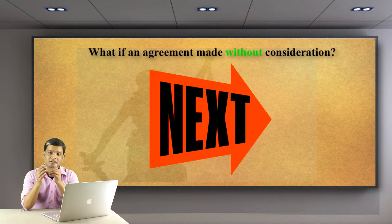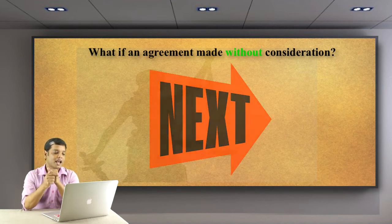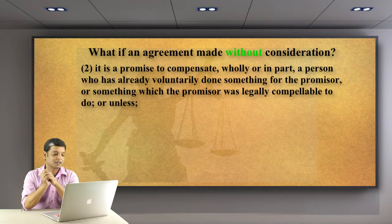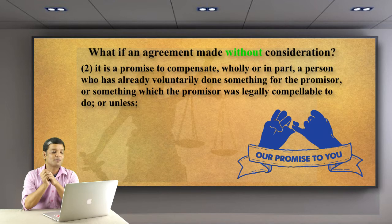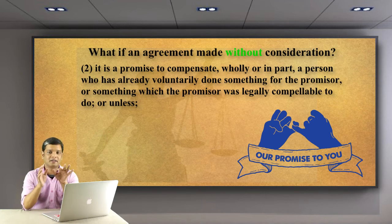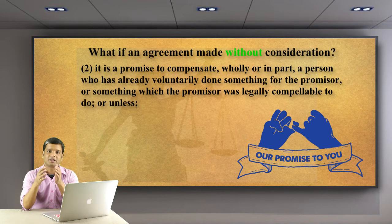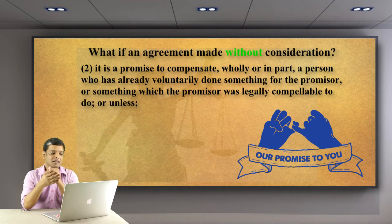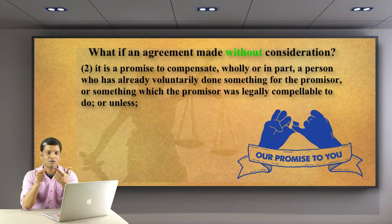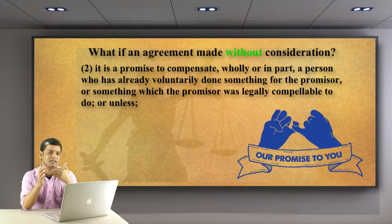The next exception: without consideration, a contract is valid if it is a promise to compensate wholly or in part a person who has already voluntarily done something for the promisor, or something which the promisor was legally compelled to do. Going back to our earlier example: if something was done in the past, that can be compensated in the present contract. In that case it is valid because one party already owes something to the other, and that is now being compensated.